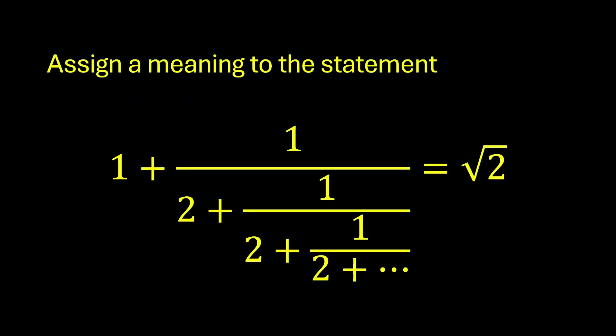So first, let's assign a meaning to the statement. Let's first explore with finite continued fractions. Let's first start with a continued fraction that only has one 2 in its denominator, which is just 1 plus 1/2. Let's call this number x1. The second continued fraction has two 2s in the denominator of its fractional part. Notice, by a slight algebraic manipulation, we can express x2 in terms of x1. That is, by breaking the first 2 in the denominator as 1 plus 1, we can write x2 equals to 1 plus 1 over 1 plus 1 plus 1/2. But 1 plus 1 over 1/2 is just x1. So therefore, x2 is 1 plus 1 over 1 plus x1.